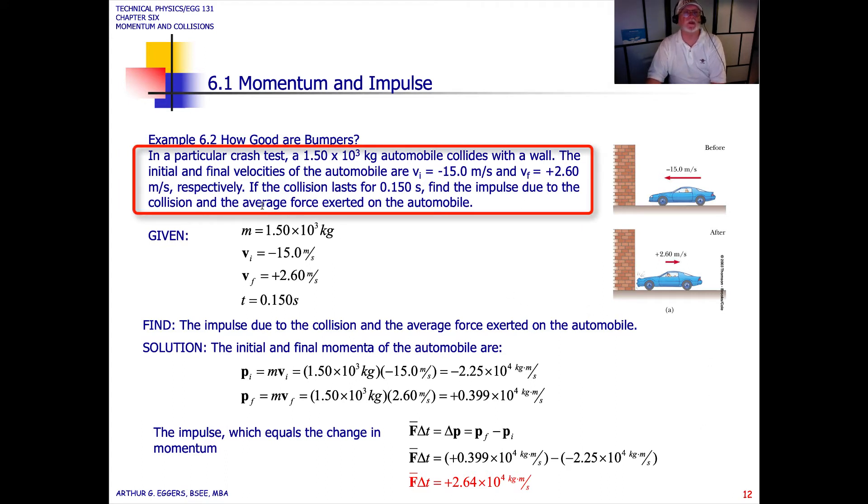All right, a car example. In a particular crash test, a 1.5 times 10 to the third kilogram automobile collides with the wall. The initial and final velocities of the automobile are v-initial minus 15 meters per second, v-final plus 2.60 meters per second. Minus 15 meters per second is the initial. 2.6 is the final. If the collision lasts 0.15, 15 hundredths of a second, find the impulse due to the collision and the average force exerted on the automobile.